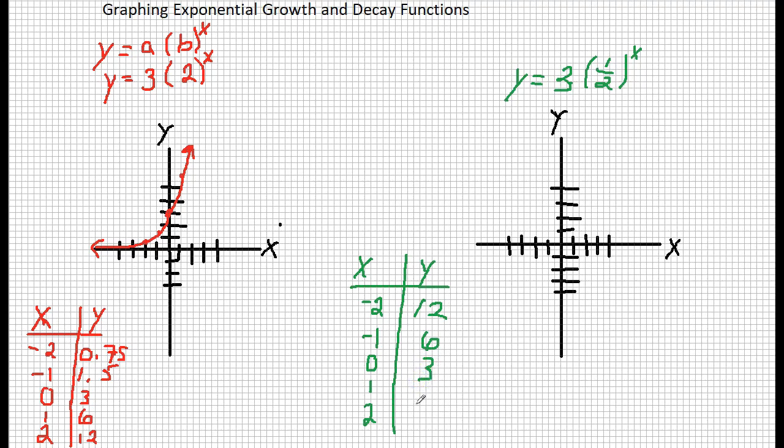Now what if I were to plug in positive 1? 1 half to the first power is 1 half times 3 gives you 3 halves, which as a decimal is 1.5. Seeing similarities with this table and this previous table? Yeah, it's the same thing in backwards order. Why? Because with this being the reciprocal of the two, they're going to be backwards of each other. So if I plug in 2, I am going to get 0.75, in other words, 3 fourths.